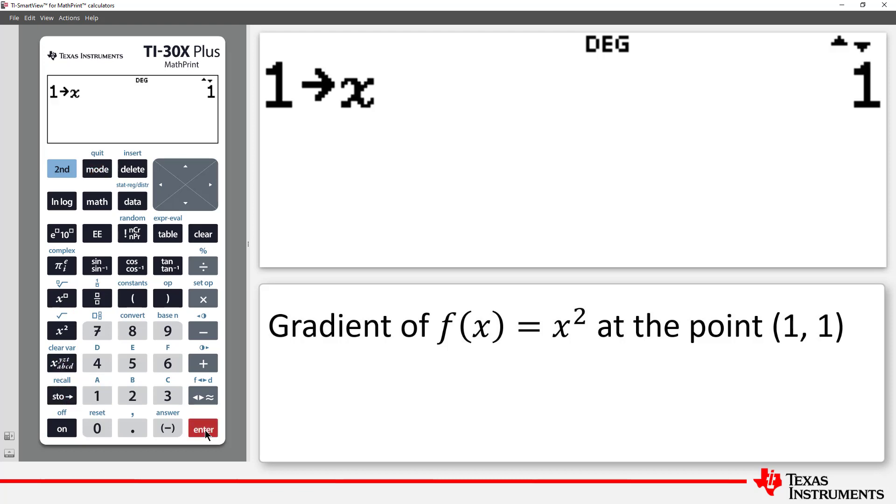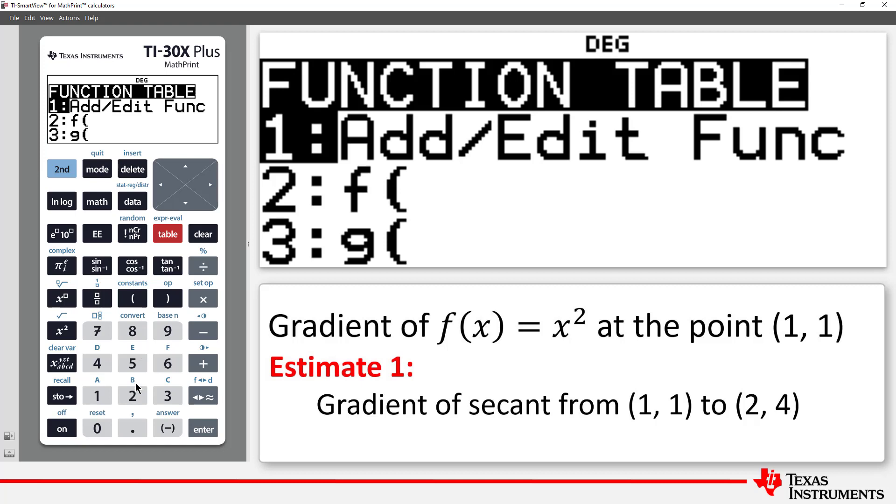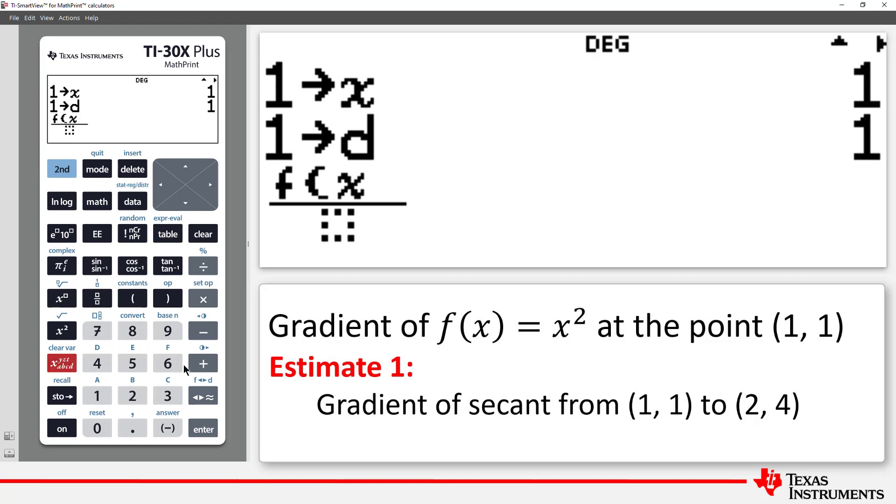In our previous example, we had a secant connecting the point, which means d equals 1, the horizontal distance between our two points. Now, I can type the expression for the gradient. I'll use the fraction template to separate the numerator, rise, and the denominator, run. The difference between our y values is f of x plus d minus f of x. And the denominator is just the difference between the x values. So in our case, d. And press Enter.